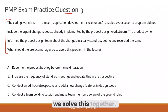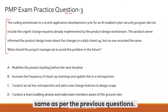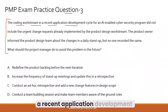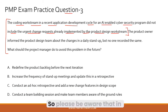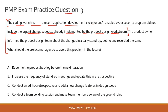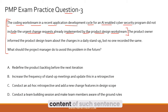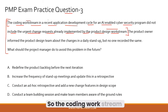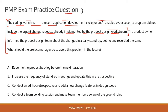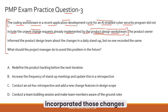Please read the question and try to answer before we solve it together. The coding work stream in a recent application development cycle for an AI-enabled cyber security program did not include the urgent change requests already implemented by the product design work stream. In your PMP exam you will encounter complex sentence constructions — you need to decipher them carefully. Essentially, the coding team omitted or could not include changes that the design team had already incorporated.